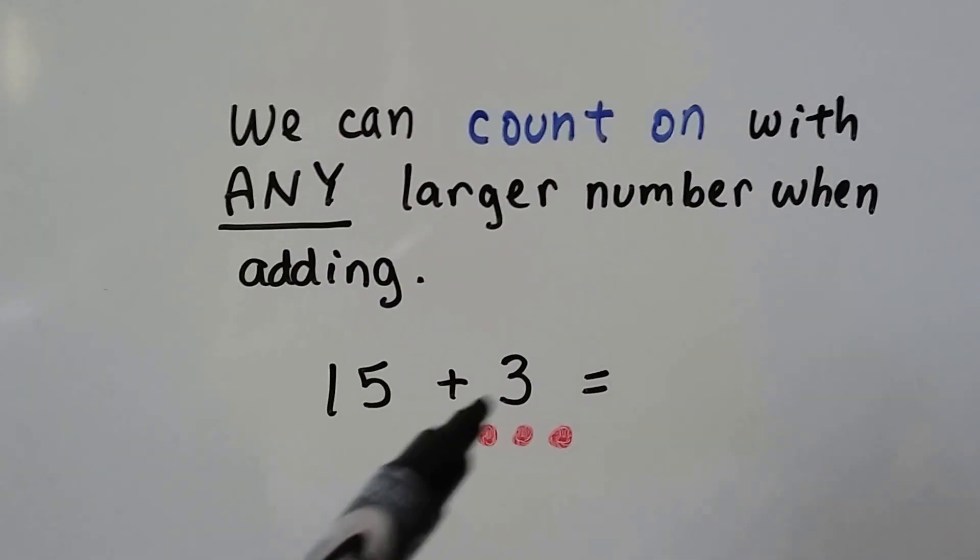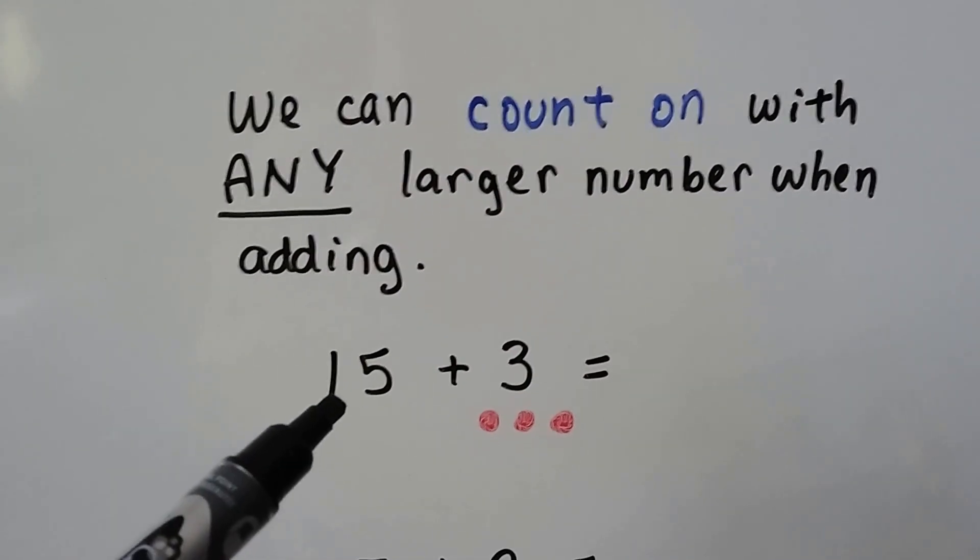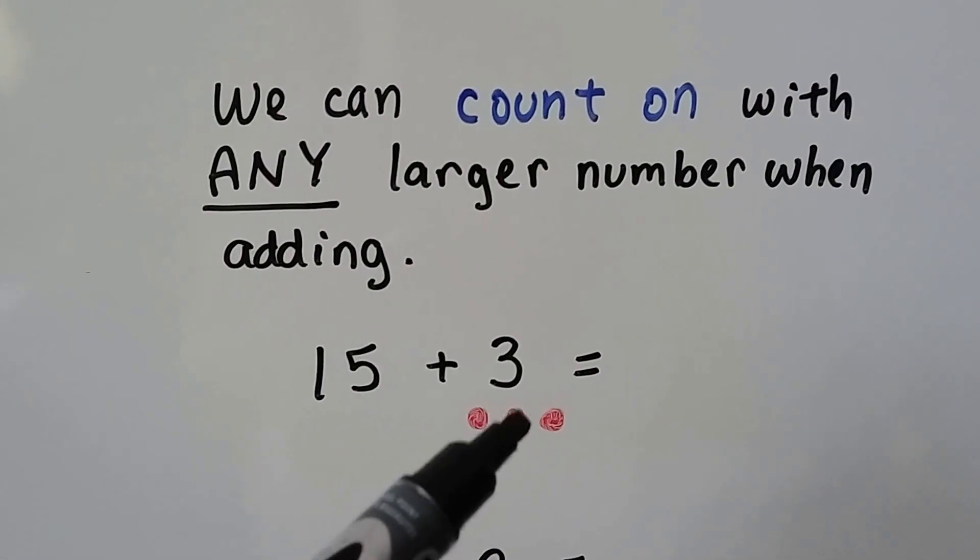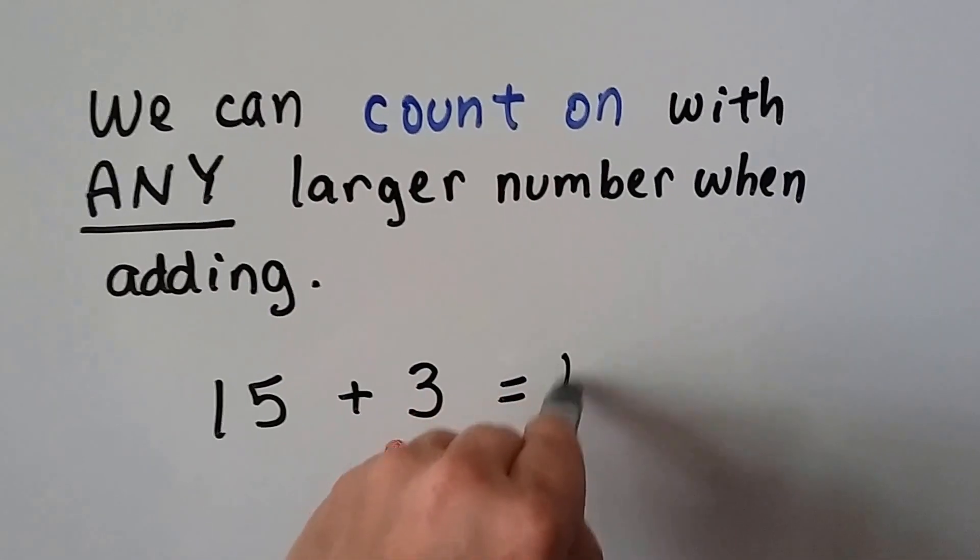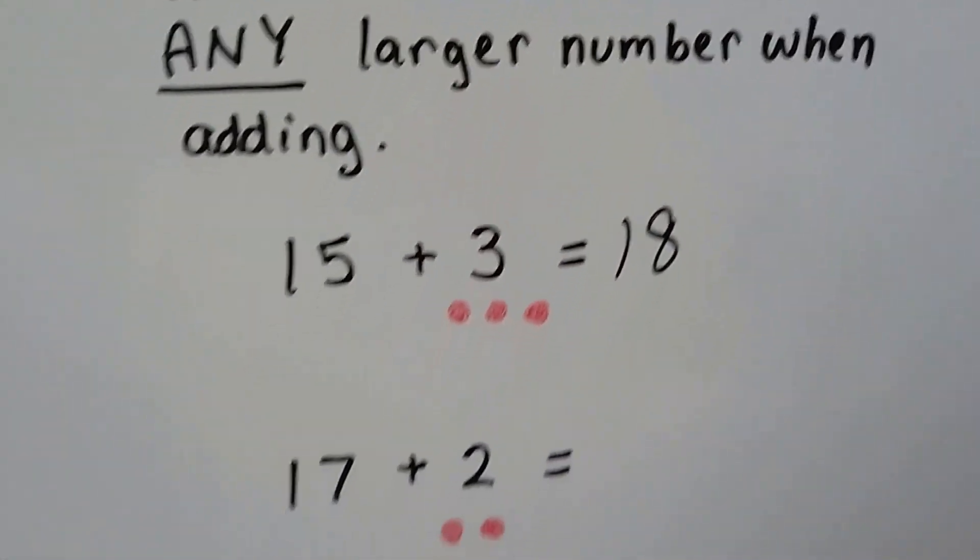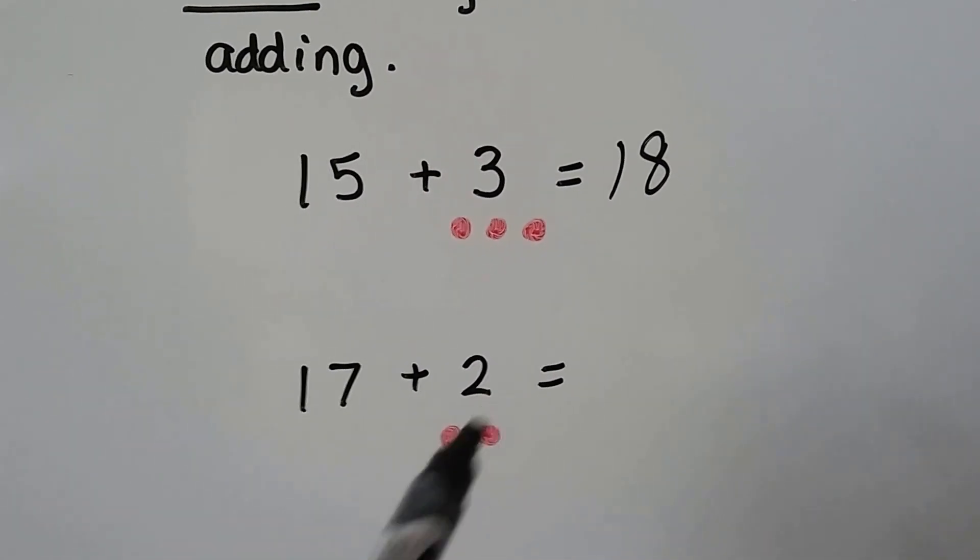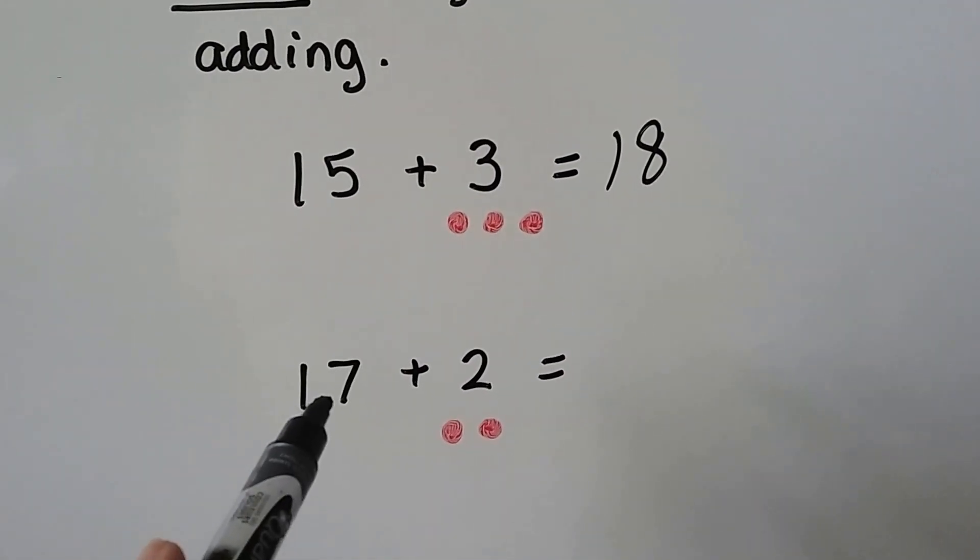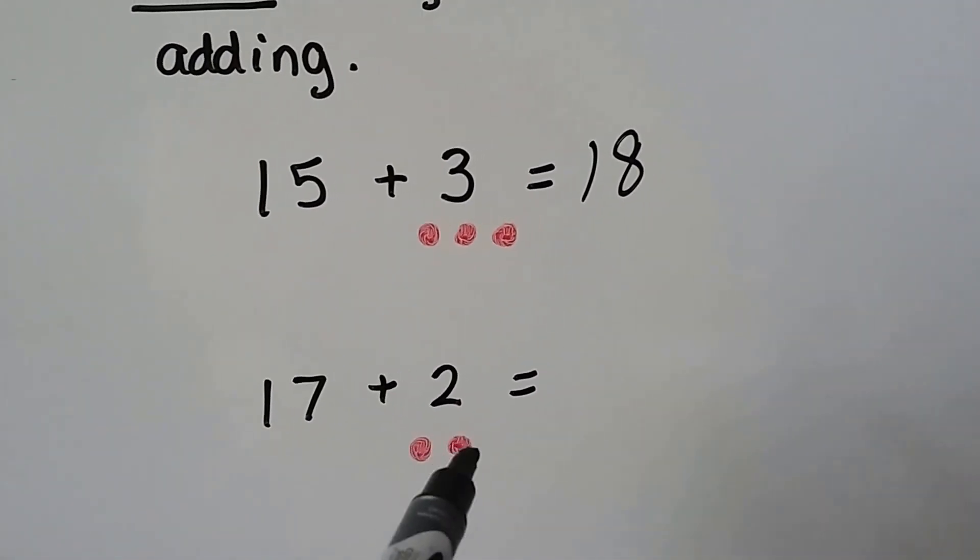If we have 15 plus 3, we start at 15 and do 16, 17, 18. 17 plus 2, we start at 17 and then say 18, 19.